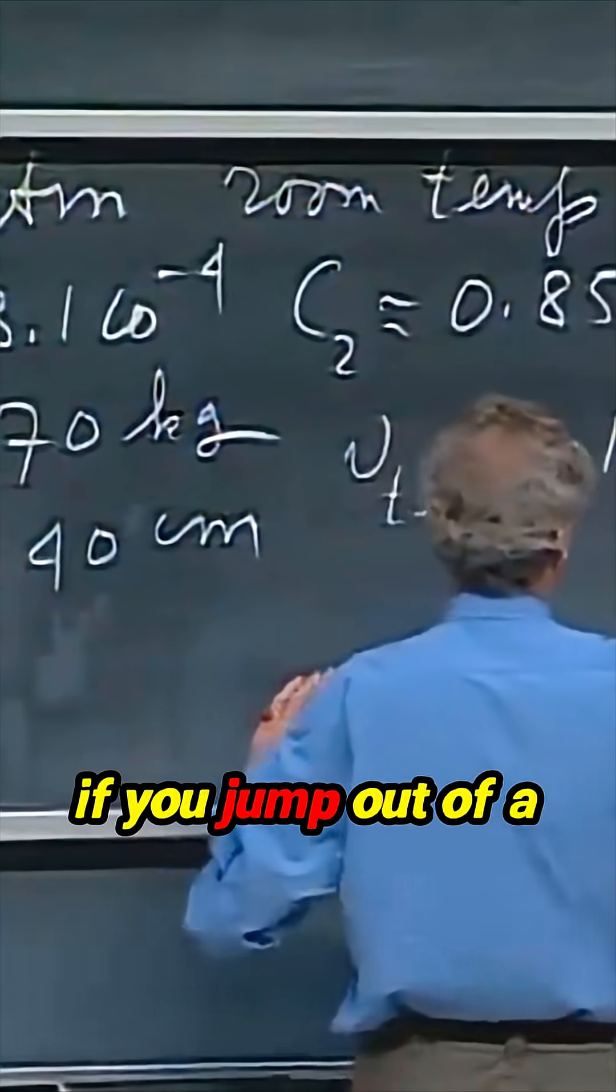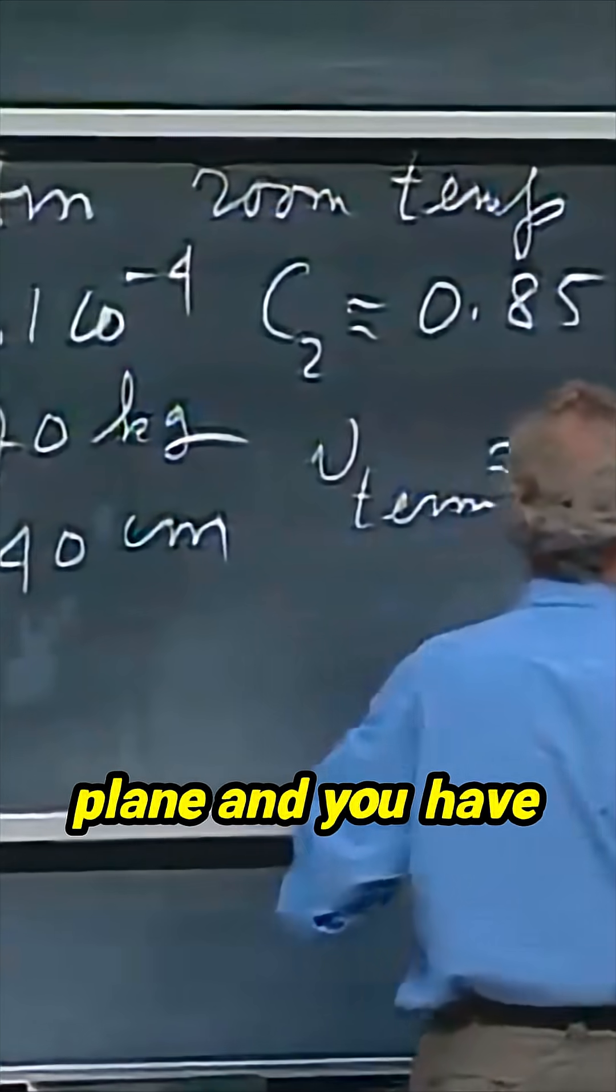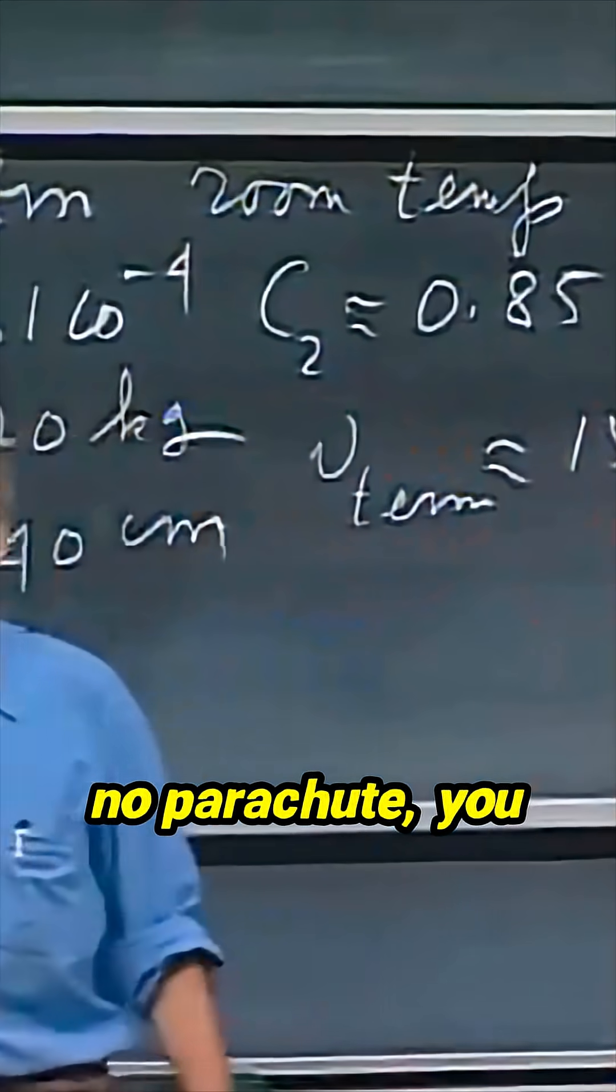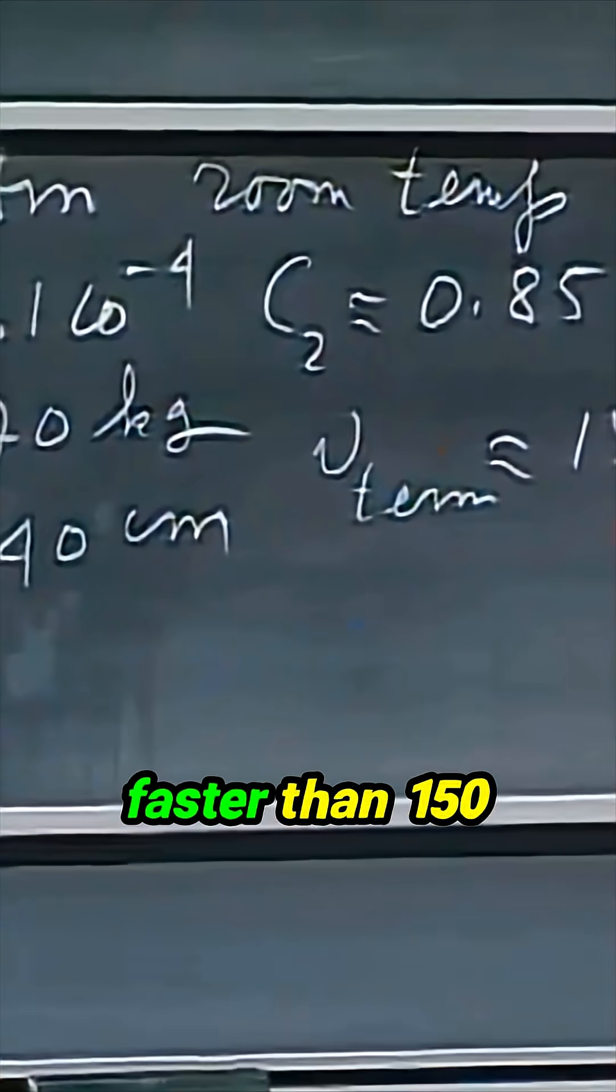So if you jump out of a plane and you have no parachute, you will not go much faster than 150 miles per hour.